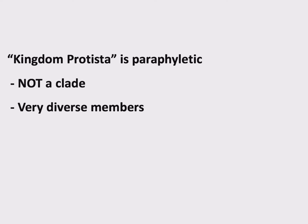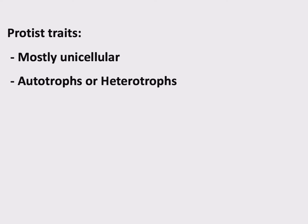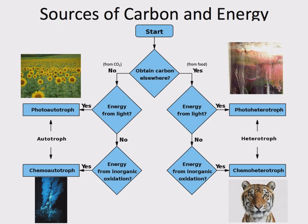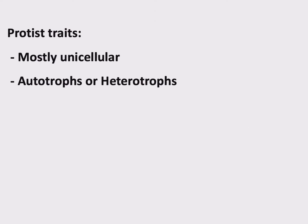So what can we say about protists? They're mostly unicellular — most are single-celled organisms. They can be autotrophs or heterotrophs. Some are mixotrophs, which is an organism that can obtain nutrition by autotrophic or heterotrophic means. So these are cells swimming around eating bacteria like a heterotroph but also doing photosynthesis. Very weird, but we see these among protists.